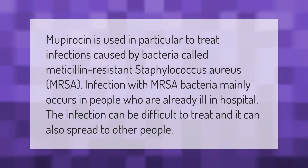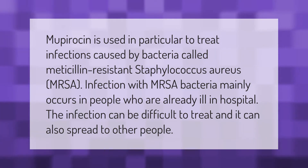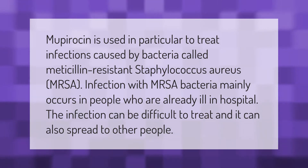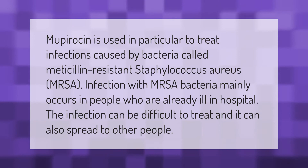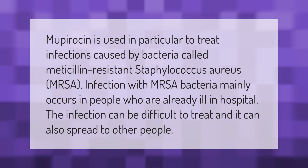Mupirocin is used in particular to treat infections caused by bacteria called methicillin-resistant Staphylococcus aureus (MRSA). Infection with MRSA bacteria mainly occurs in people who are already ill in hospital. The infection can be difficult to treat and can also spread to other people.